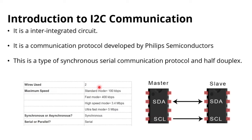I2C can communicate up to 5 Mbps, while SPI can communicate up to 10 Mbps. These are the main differences between I2C and SPI, along with the introduction to I2C communication.